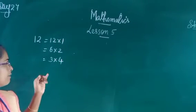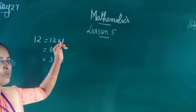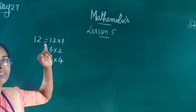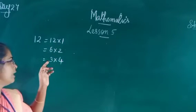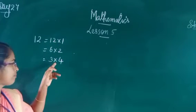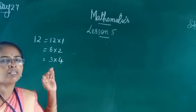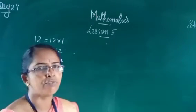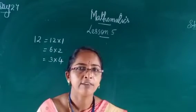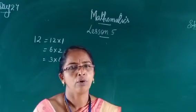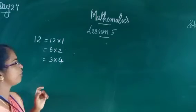12 can be expressed as 1 into 12, or 2 into 6, 6 into 2, then 3 into 4 or 4 into 3. So these numbers 1, 2, 3, 4, 6, and 12 are the factors of 12.